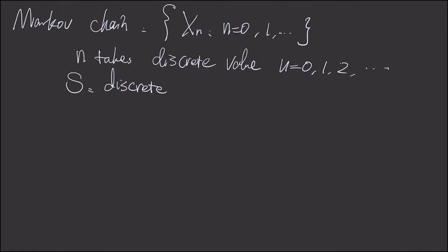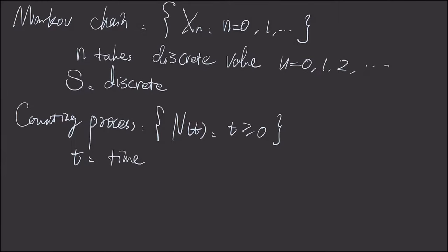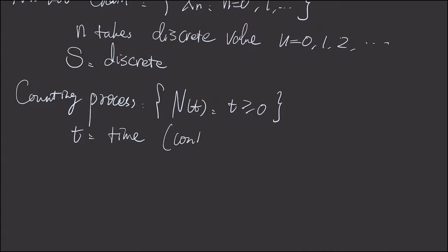And today we'll learn a new type of process. It's called the counting process. This process has a continuous time input. So t is time and it's a continuous variable. While N(t) itself takes discrete value, which represents the number of events happened during time t.